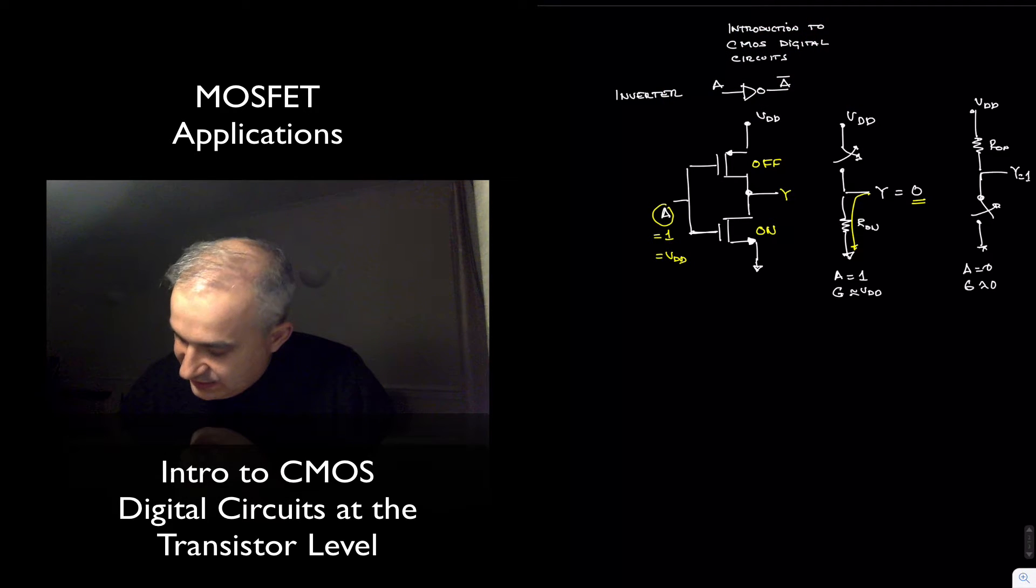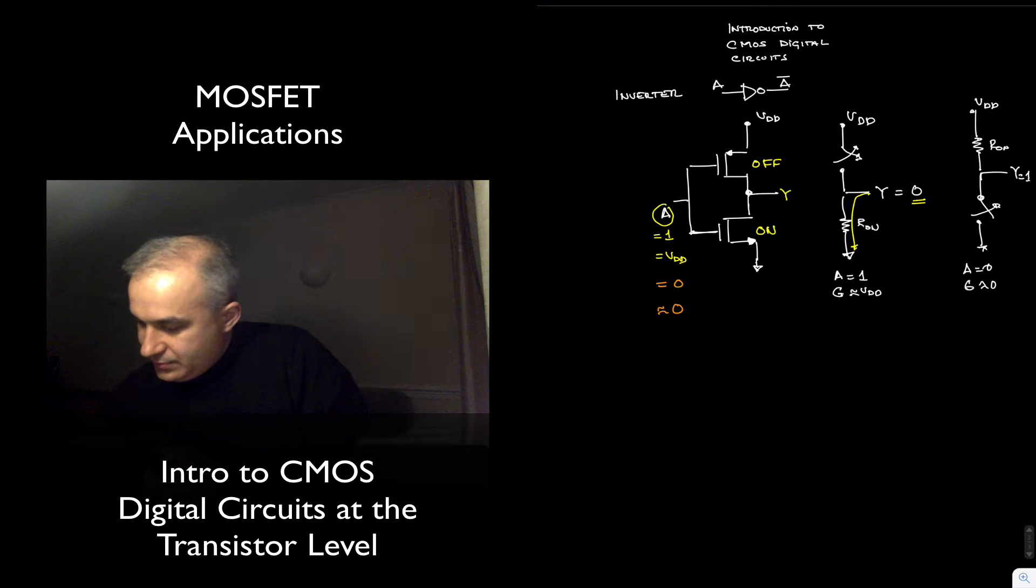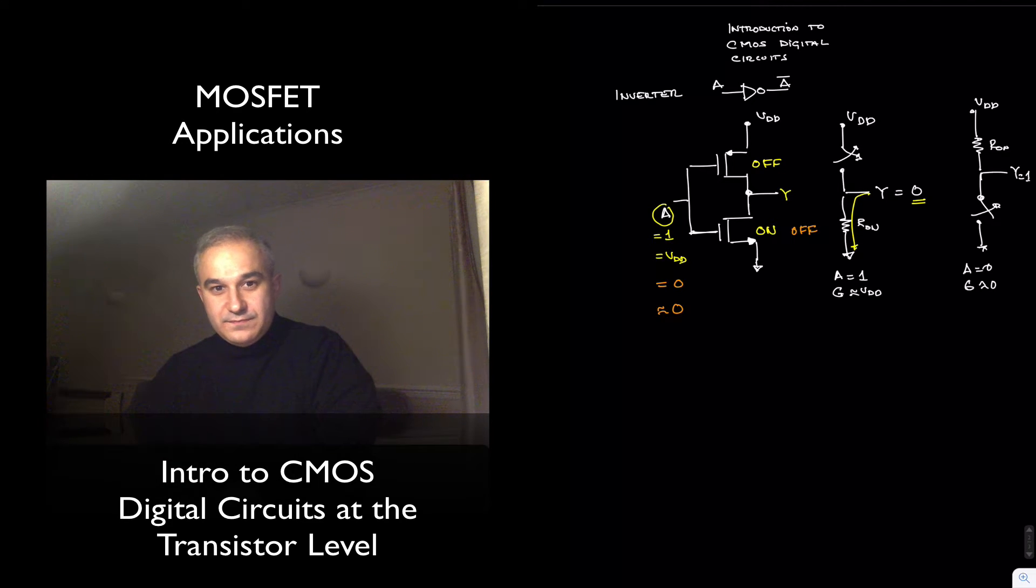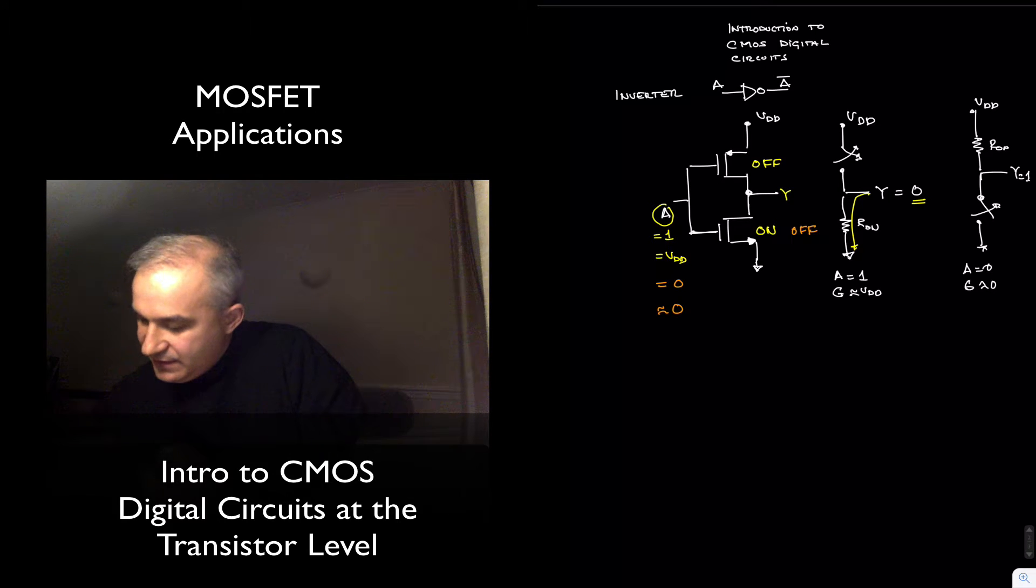However, if A is zero, or approximately equal to zero, now this transistor is OFF, is in cutoff, and this other one is ON, we are in this situation. And so, open, off, and we get the LOGIC 1.